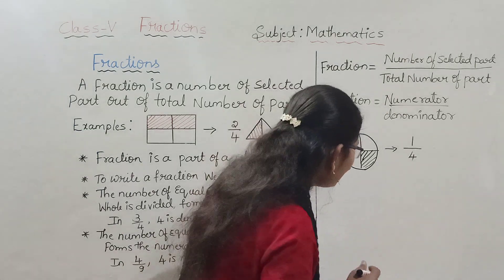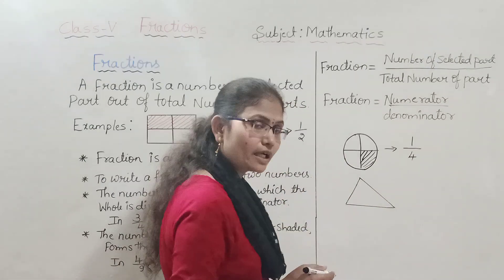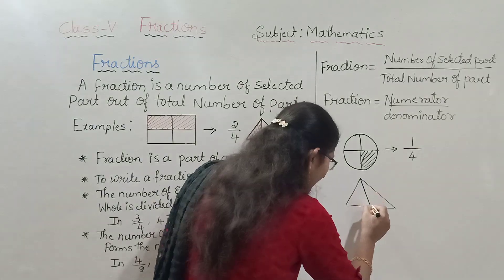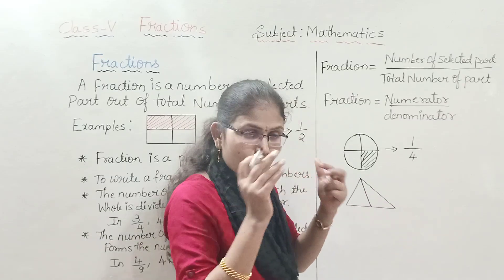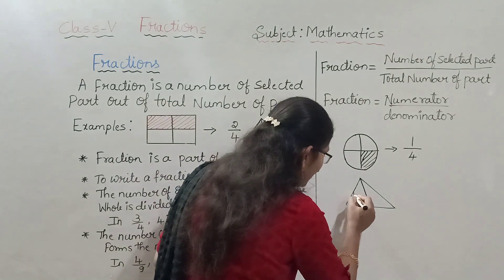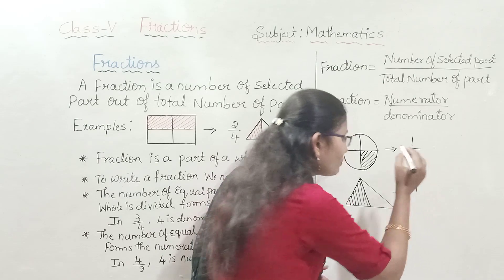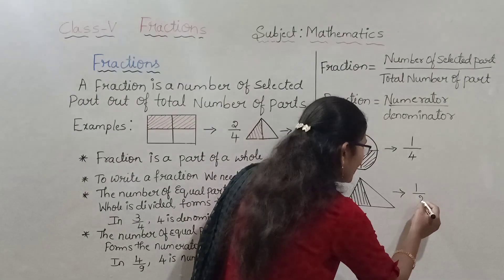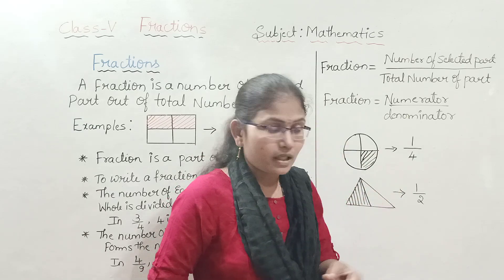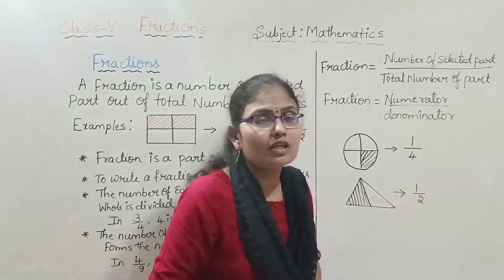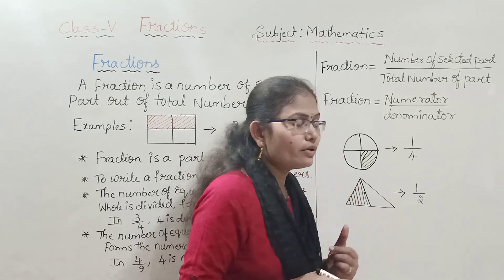Next, let us take another figure — a triangle. You are familiar with the shape of a triangle. I have divided this triangle into two equal parts. From these two equal parts, I will take one part and shade it. How do we represent this using numbers? I have taken one part out of two equal parts. The upper part represents the number of selected parts, and the lower part represents the total number of parts.